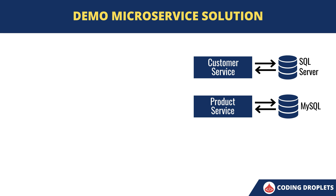This microservice will only have the product module in it. You can also include submodules related to the product module like product category, product brands, manufacturer etc. But for demo purposes I am only creating the product module now.